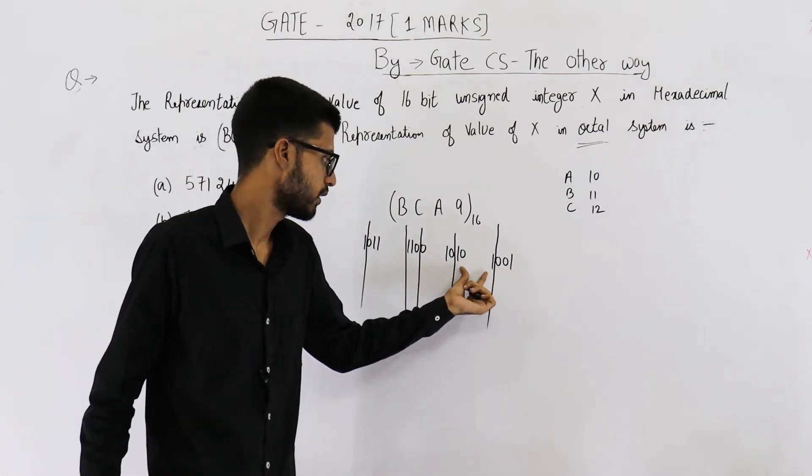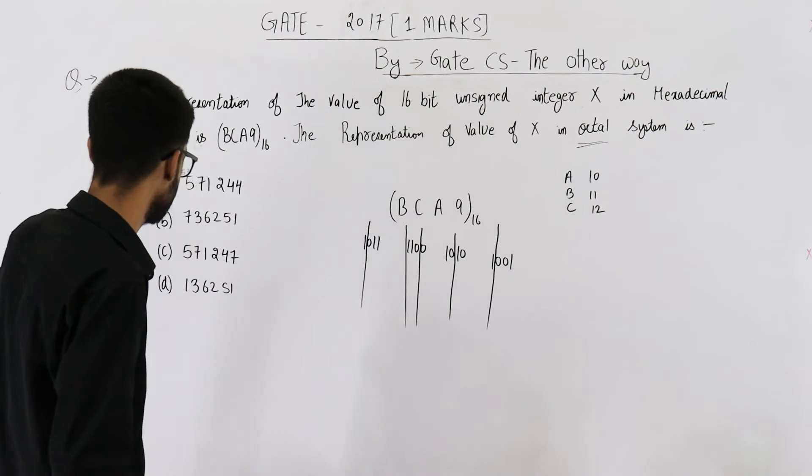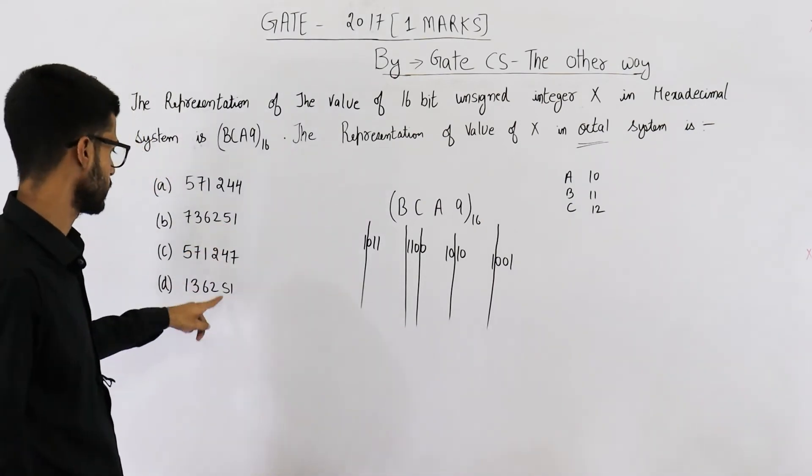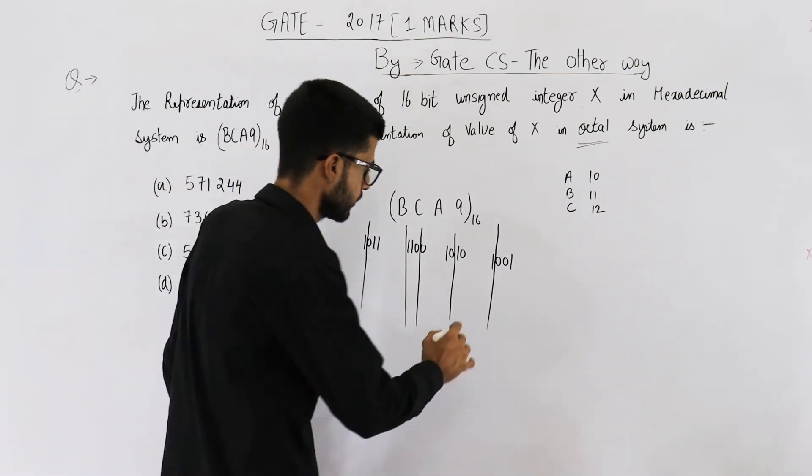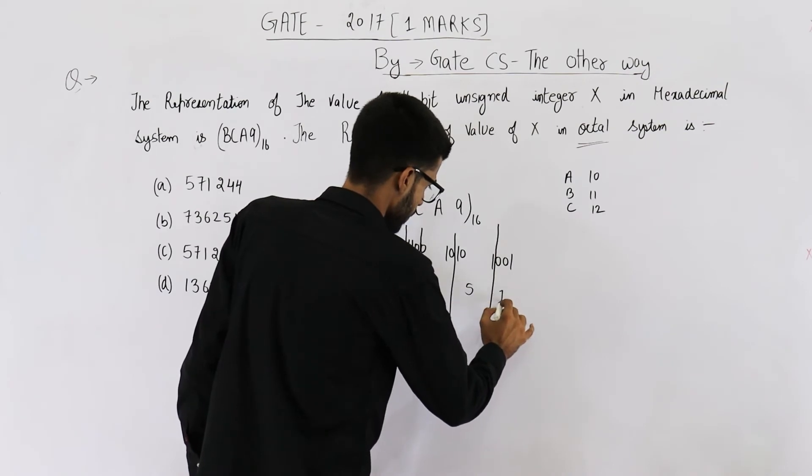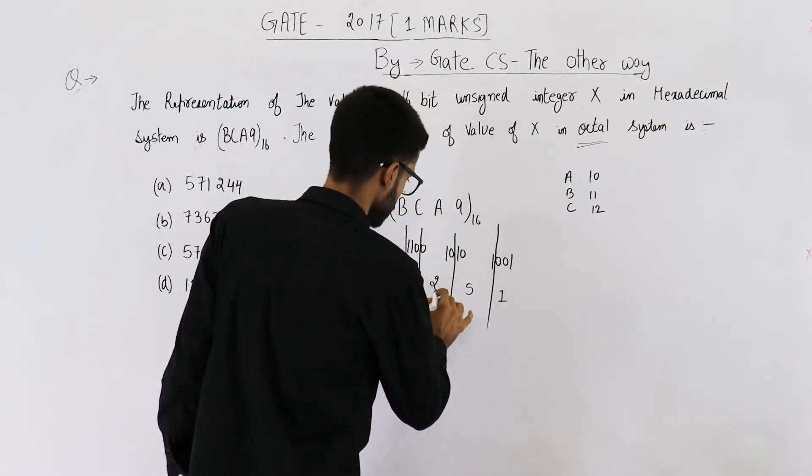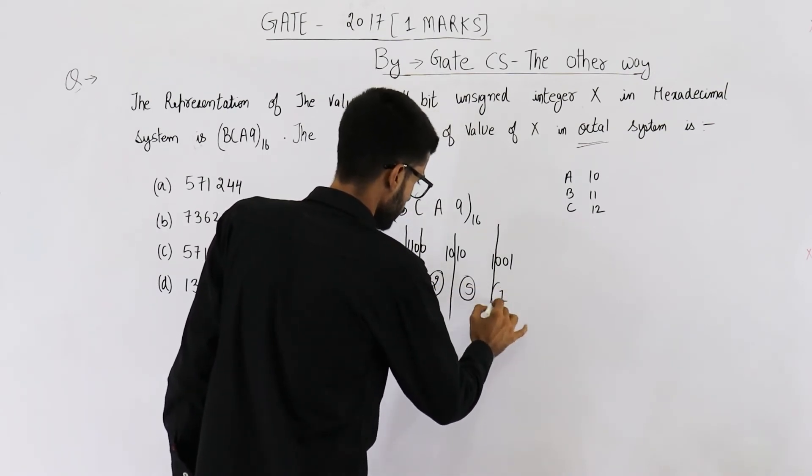So this is the number that you will get, 1 5. So the number is ending with 51. We have two such options. Anyways, 5 1, this is 2, 2 5 1.